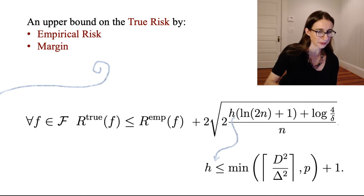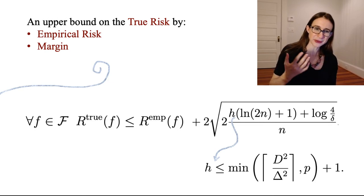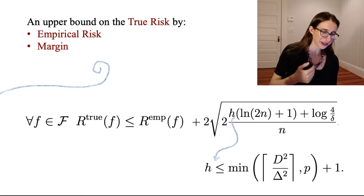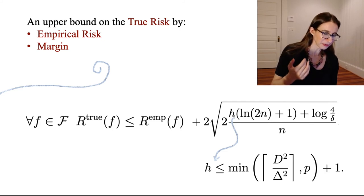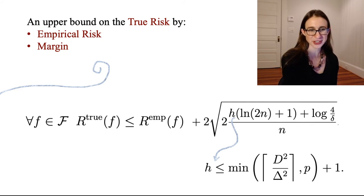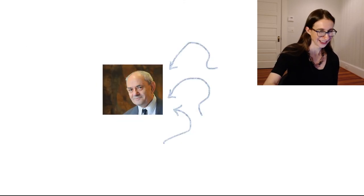So here now the margin is controlling the simplicity or the capacity of our function class. And although this bound, as I mentioned, is too loose to be directly minimized, it really gives us a complete justification of the margin theory for support vector machines. Minimize empirical risk, maximize margins, and all will be good.